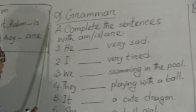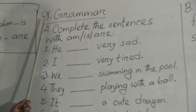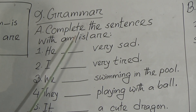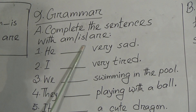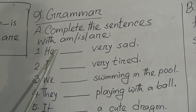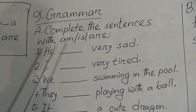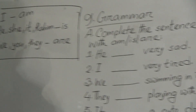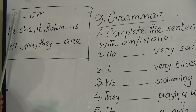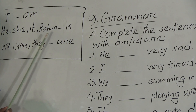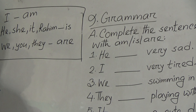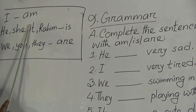Grammar A, this is Grammar A, Question Number 9. Part A: Complete the sentences with am, is, or are. So we will complete the fill-in-the-blanks with am, is, or are. You can see after 'I' we put 'am'.